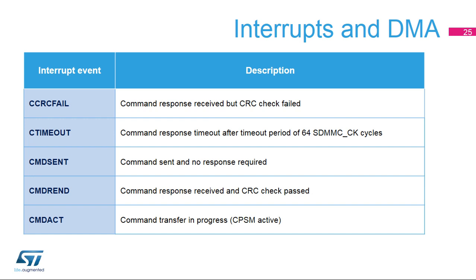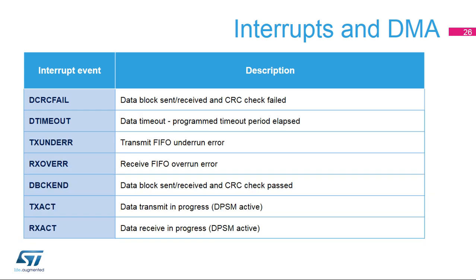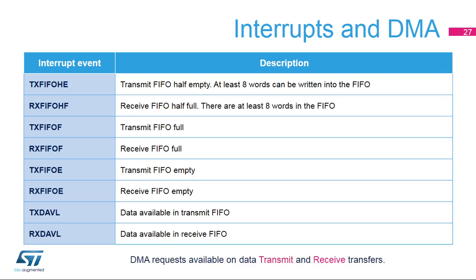Here is an overview of interrupt events. This slide shows events related to the command path state machine, the list of flags for the data path state machine with events related to the transfer direction and transfer status, and the list of flags available for FIFO management in interrupt and polling modes. DMA requests are internally generated when triggered by FIFO threshold events.